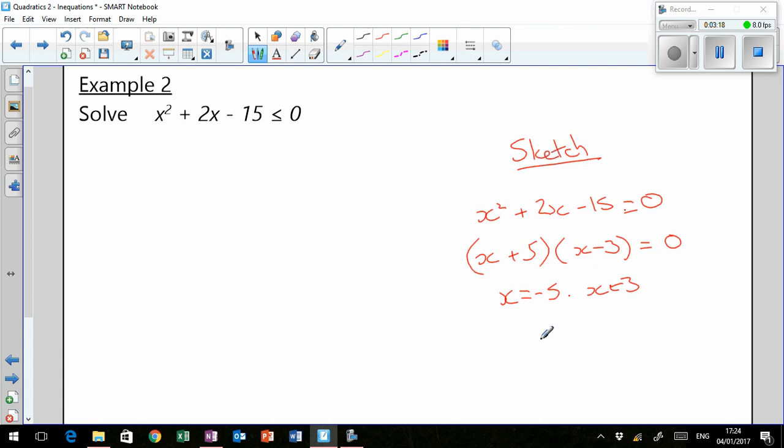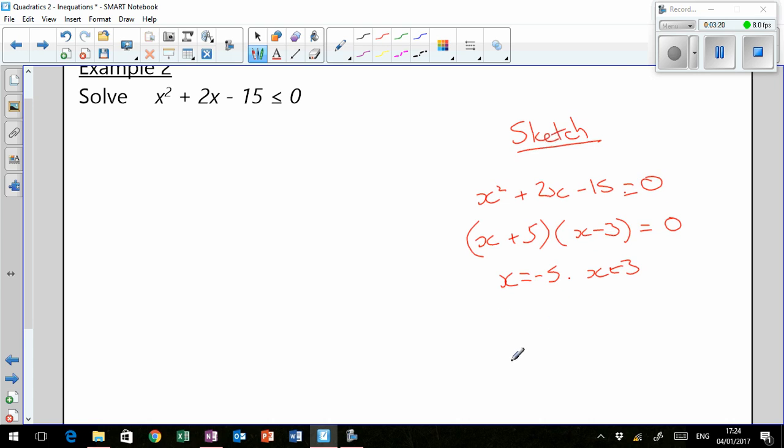So the solution is x equals negative five and x equals three. And for our sketch, again, it's a positive parabola with roots at minus five and three.